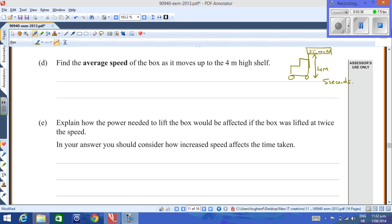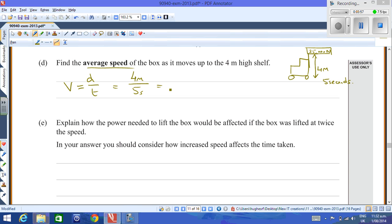The question then goes on to get a little bit more physics out of the motion involved and asks you to find the average speed of the box as it moves up to the four meter high shelf. Speed equals distance over time, and the distance covered by the box is of course four meters and the time taken was five seconds, so the velocity or speed of the box as it moves at constant speed is 0.8 meters per second.